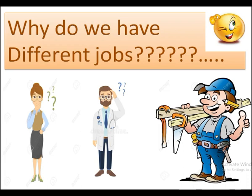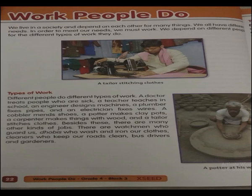Let's have an overview of our content book. This topic — Work People Do — is on page number 22. We live in a society where we depend on each other for many things. We all have different needs, and in order to meet all our needs we must work. We depend on different people for different types of work.